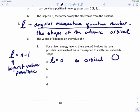Now, if let's say n is equal to two, two minus one is one, so that means that's the highest value that L could be. If L is one, this is describing the P orbital, which looks like a dumbbell or a pair of water wings.